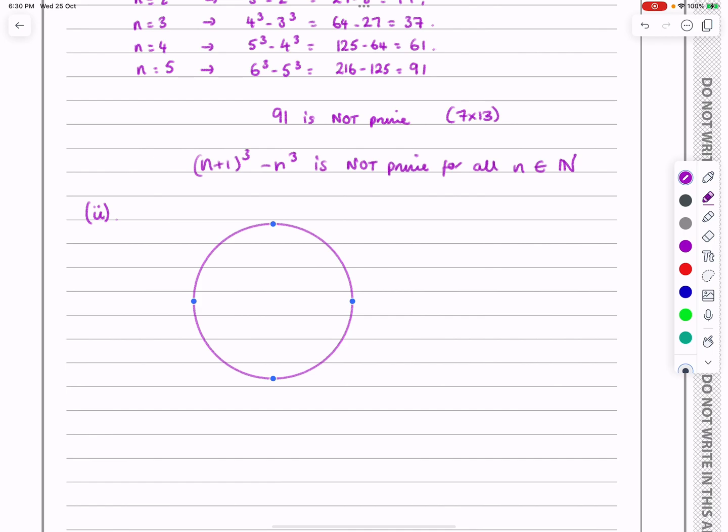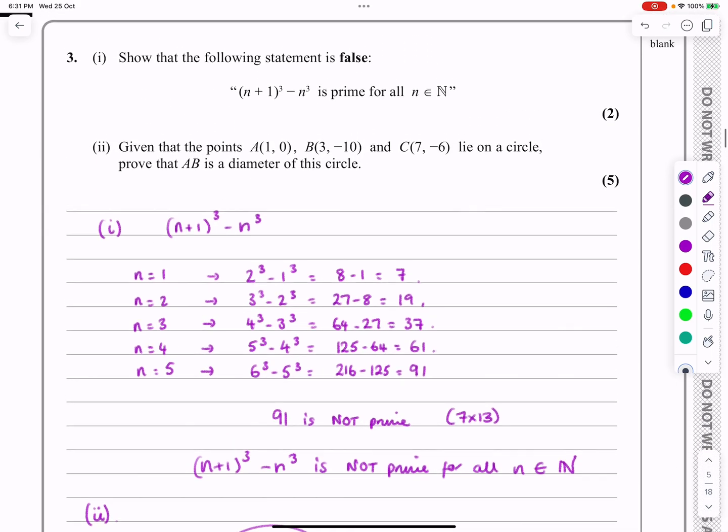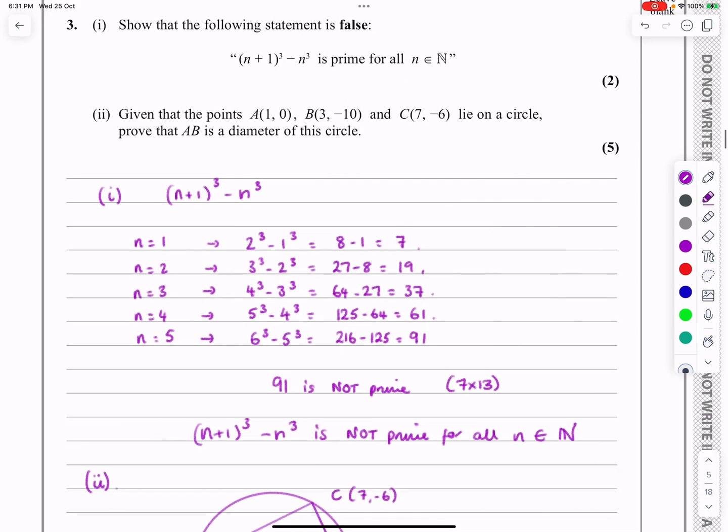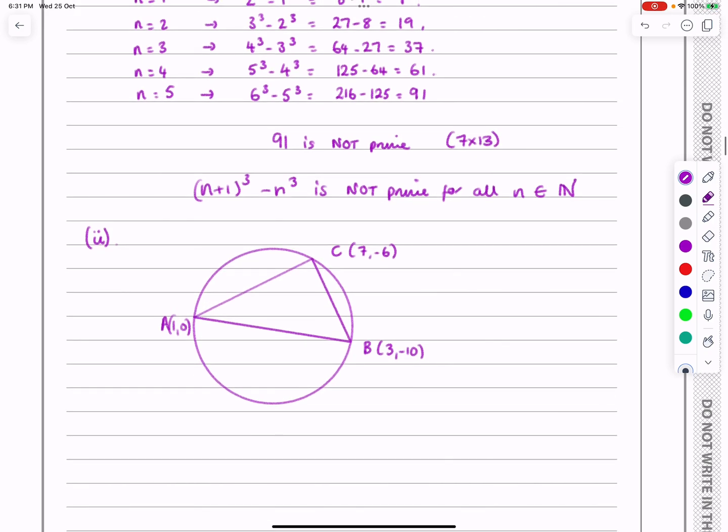And let's, when I do my drawing, actually have what I'm trying to prove. So they've said that they want to say that AB is going to be a diameter. 3, -10 and 1, 0 of those two. And C is somewhere else on the circle. And C is 7, -6. So let's just go back and check it again. Given that those three points are on the circle, prove that AB is a diameter of the circle.